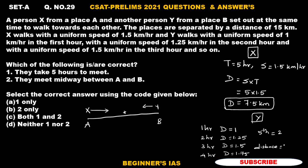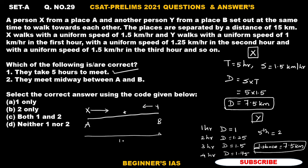Y also covers a distance of 7.5 km. So the combined distance covered by X and Y is 7.5 + 7.5 = 15 km, which equals the total distance between A and B. This confirms they take five hours to meet — statement 1 is correct. Since 7.5 km is exactly the midway point of 15 km, they also meet midway between A and B — statement 2 is also correct. Therefore, the answer is option C: both 1 and 2. Thank you all.